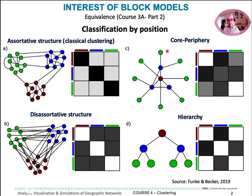We have no connections in some cases. The hierarchy is one kind of this core-periphery model taken to the extreme, with a maximization of links between the red and the blue, and between the blue and the green.